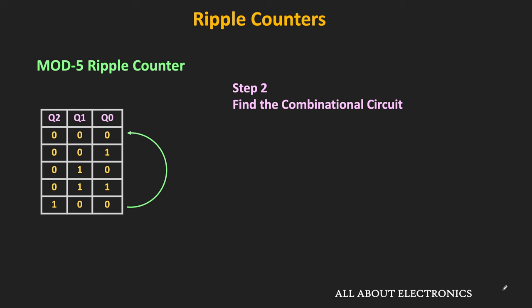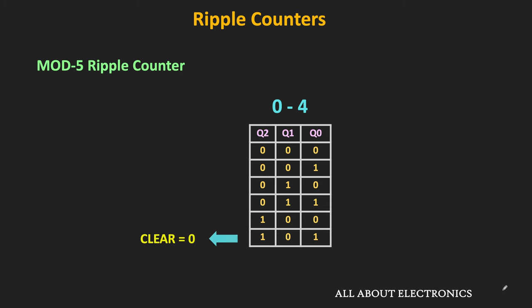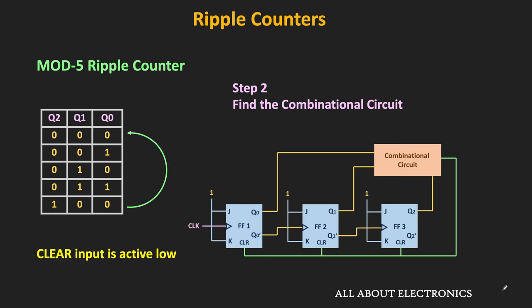The second step is to find the combinational circuit. The output of each flip-flop is given to the combinational circuit, and its output is connected to the clear input of each flip-flop. We are assuming the clear input is active low, meaning when this signal is low, it will reset all flip-flops to 0. Assuming the up counter, this 3-bit counter will count from 0 to 7, but we need to design the combinational circuit so that it generates the clear signal when the output count goes beyond 100, resetting the counter to 000.